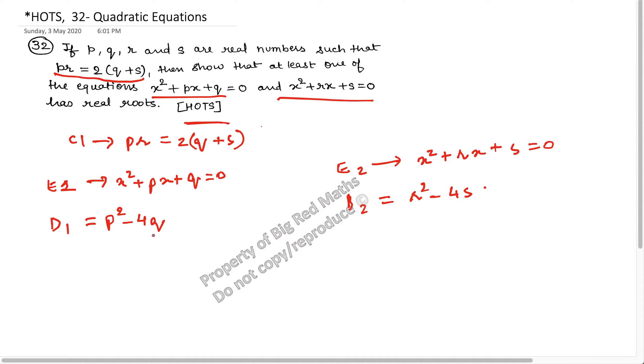Now if I add D1 and D2, look what do I get? D1 + D2 becomes equal to p² - 4q plus of r² - 4s. This becomes equal to p² + r² - 4 times of (q + s).